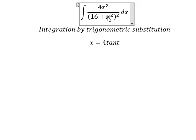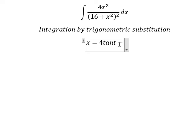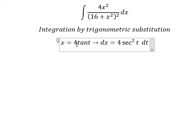And later we simplify by dx. dx we have 4 secant squared t dt, because the derivative of tan t we have this one. Now I will put this one here and here.